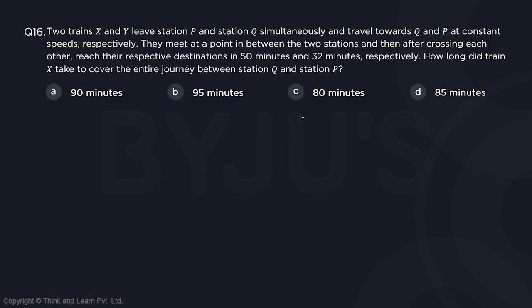Question number 16, two trains X and Y leave station P and station Q simultaneously and travel towards Q and P at constant speeds respectively.